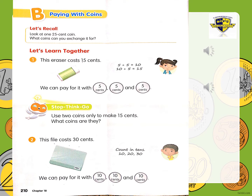Take a sheet of paper, draw a circle, and then write inside 25 cents. Use your 1-cent coins, 5-cent coins, and 10-cent coins. Try and make the different ways how you can exchange these coins with 25 cents. How can you make 25 cents? What are the different ways you can exchange the 25-cent coin with?